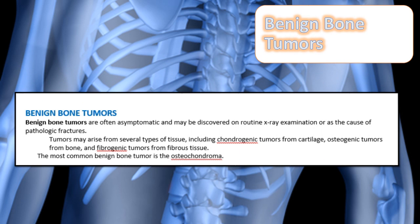Benign bone tumors are often asymptomatic and may be discovered on a routine x-ray exam or as a cause of pathological fractures. Tumors may arise from several types of tissue, including chondrogenic tumors from cartilage, osteogenic tumors from bone, and fibrogenic tumors from fibrous tissue. The most common benign tumor is osteochondroma, which you may see as a patient diagnosis.